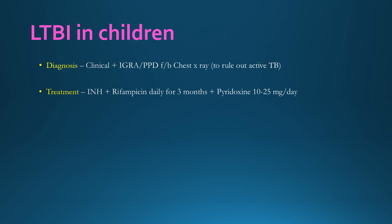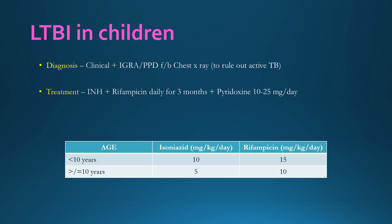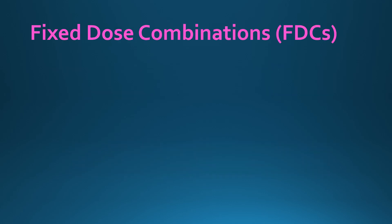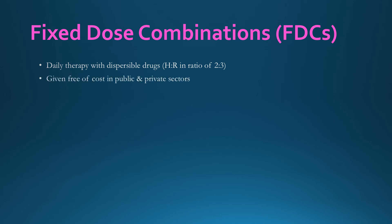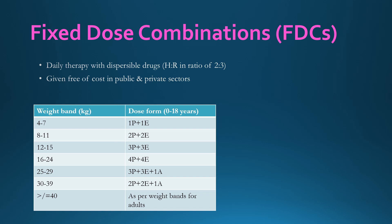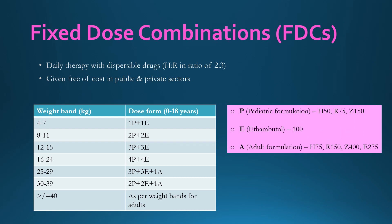The dosage of isoniazid and rifampicin for TB preventive therapy differs by age group. For children under 10 years, isoniazid is given at 10 mg/kg/day and rifampicin at 15 mg/kg/day. For those aged 10 years and above, the doses are 5 and 10 mg/kg/day respectively. Fixed dose combinations are available as daily dispersible drugs in the H:R ratio of 2:3, provided free of cost in public and private sectors.